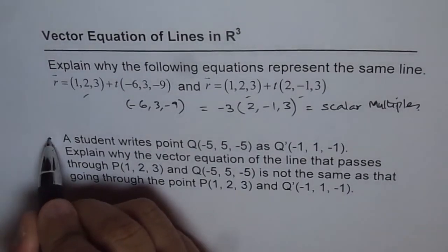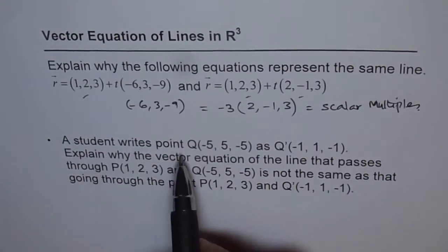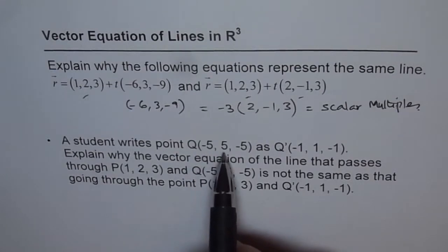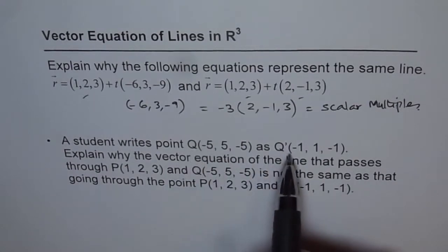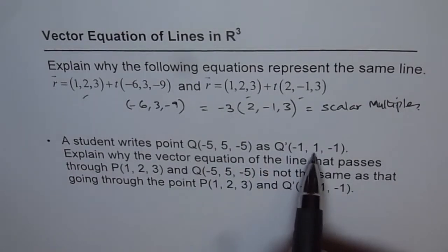Now here the second part of the question: a student writes point Q which is (-5, 5, -5) as Q' dividing each by 5 and writing this as (-1, 1, -1).